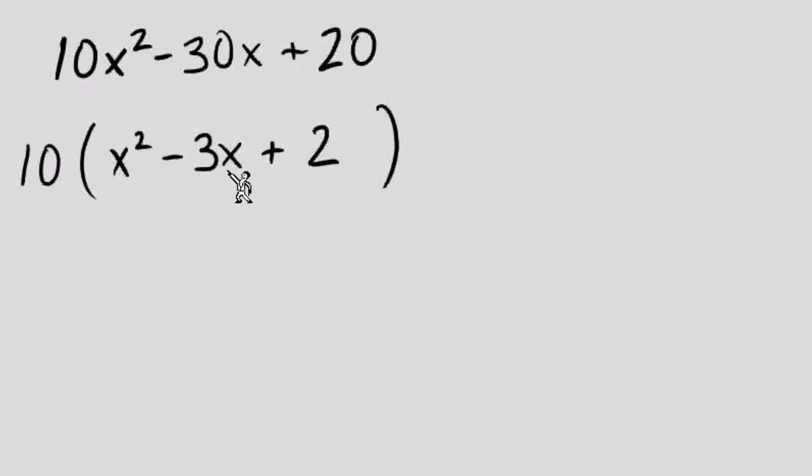The choice that we're going for is negative 2 and negative 1. That's the pair that works for the multiply and works for the add. Don't forget about our GCF, there's still a 10 out front. Now that expression is factored.